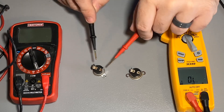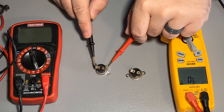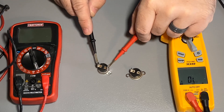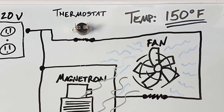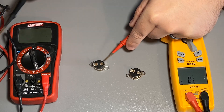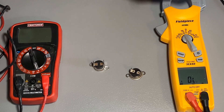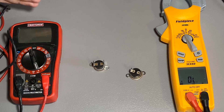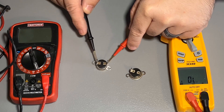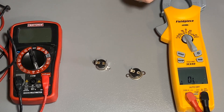This is a thermostat. Out of the package, it does not have continuity — no continuity, and this is okay. The thermostat sits in line with a fan or another item to cool the microwave down. Power will go to it, but it won't activate the other pieces to cool the microwave down until it gets out of temperature range. Once it gets up to around 150 degrees, the thermostat would show continuity, but until it reaches that point, it will not.